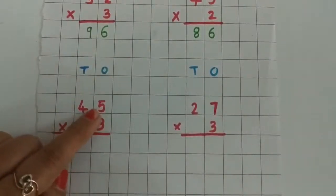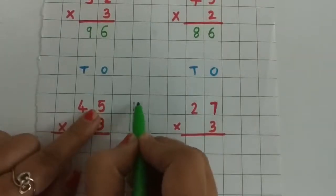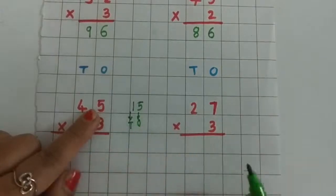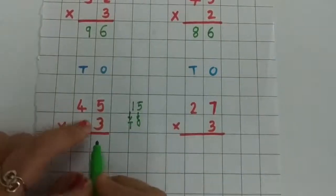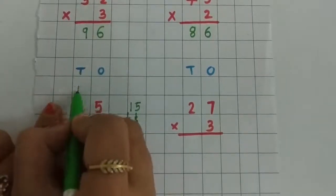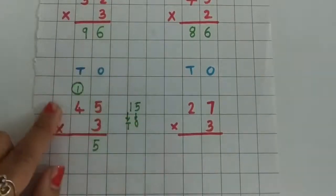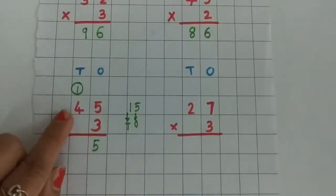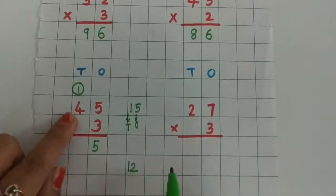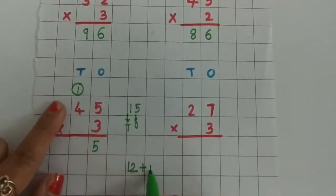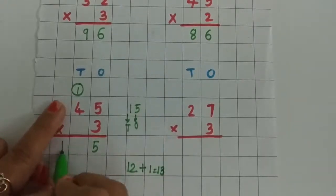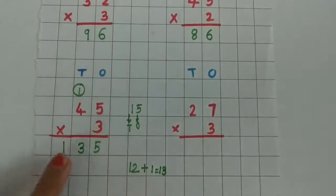3 fives are 15. In 15, 5 is on the 1's place and 1 is on the 10's place. So write 5 below the 1's place column and 1 is carried over to the 10's column. Now, 3 fours are 12, and you have to add this carry: 12 plus 1 is equal to 13. So write 13 here. Our answer is 135.